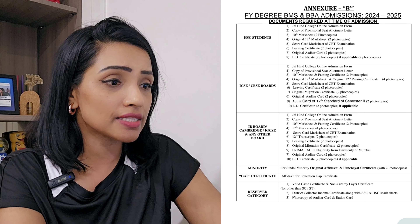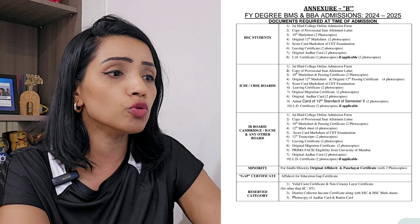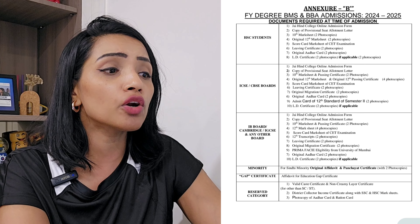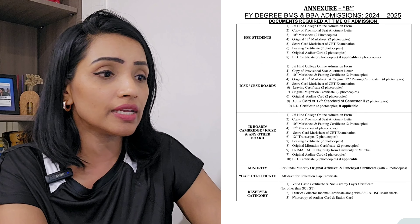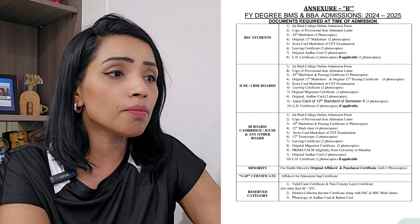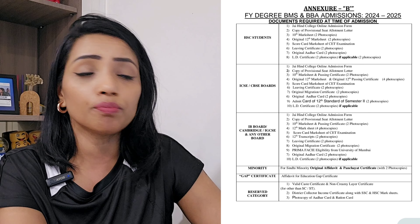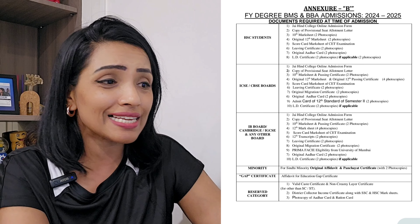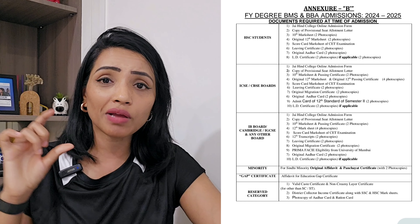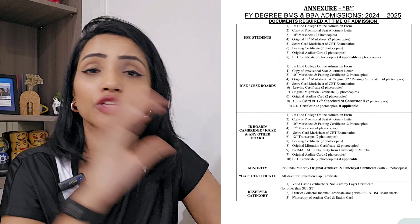For ICSE and CBSE board students, the documents are almost the same — the difference you'll notice is the admit card of 12th standard semester 2. For IB and Cambridge board students, the mandatory document of prima facie eligibility is something you need to keep in mind.